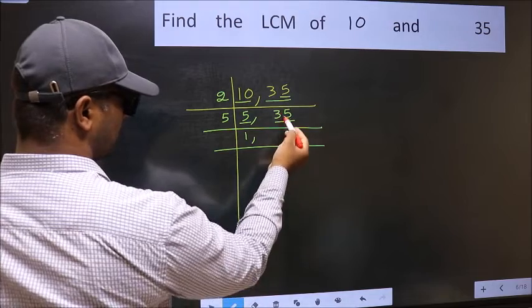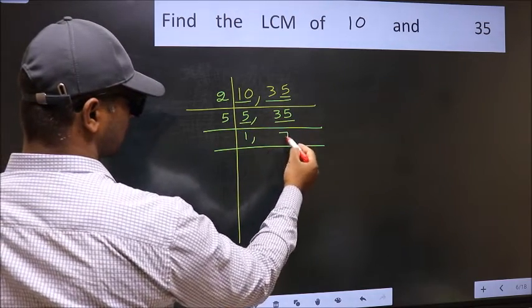The other number, 35. When do we get 35 in the 5 table? 5 times 7 equals 35.